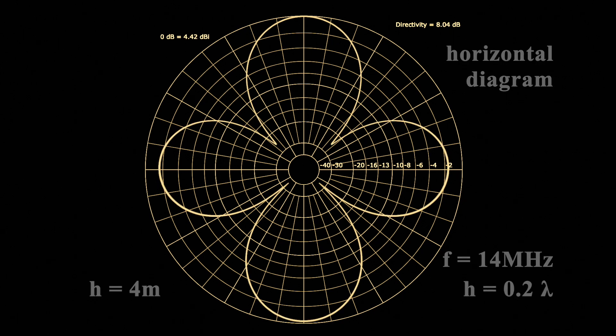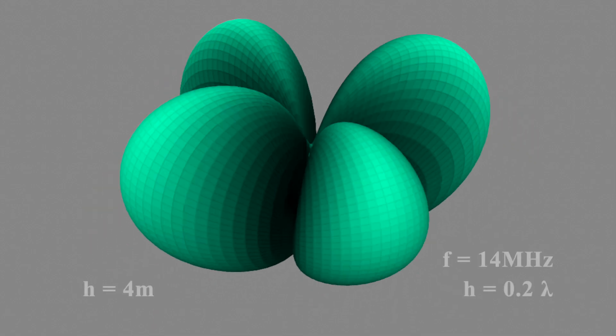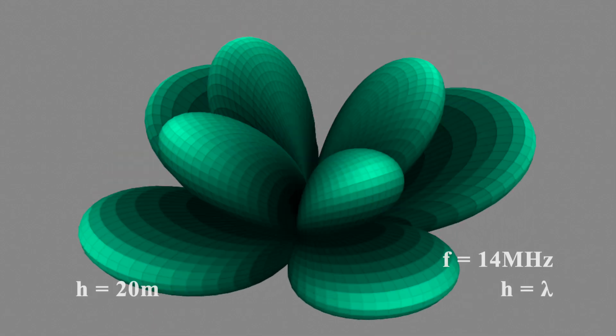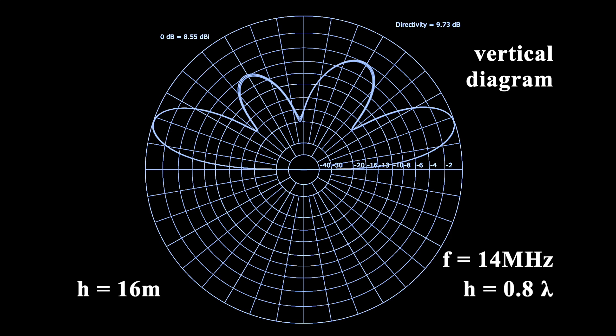I particularly like the 3D representation, which looks like a growing flower. Beautiful looking radiation patterns, isn't it? So, on 8m height or more, this antenna would be pretty suitable for the 20m band.